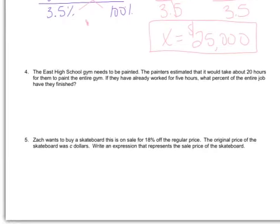So now number four. The East High School gym needs to be painted. The painters estimated that it would take about 20 hours for them to paint the entire thing. If they've already worked for five hours, what percent have they finished? Percent bar.